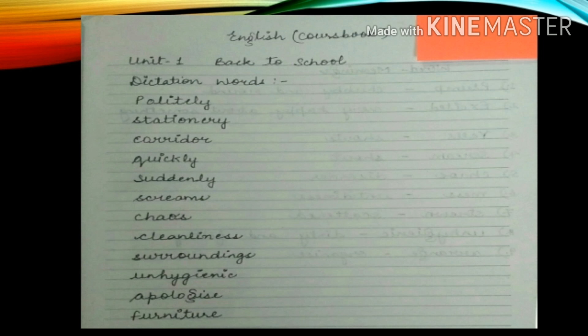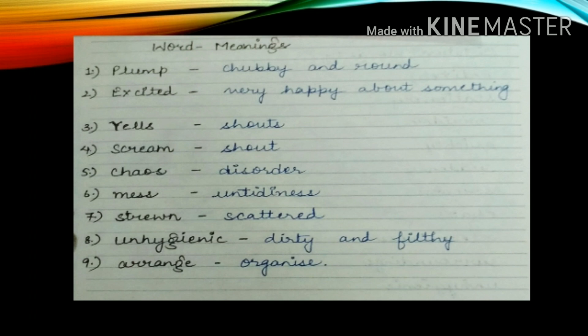Now we will learn and write some word meanings. First: plump — means chubby and round. Second: excited — means happy about something. Third: yells — means shouts. Fourth: scream — means shout. Fifth: chaos — means disorder. Sixth: mess — means untidiness. Seventh: strewn — means scattered. Eighth: unhygienic — means dirty and filthy. Ninth: arrange — means organize.